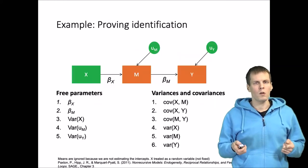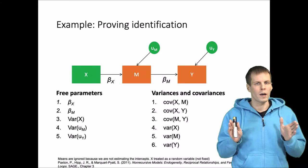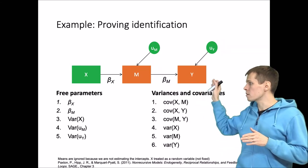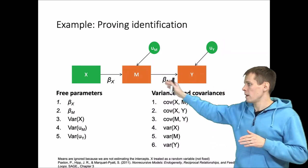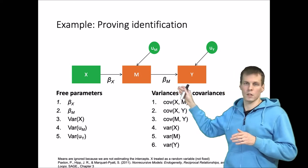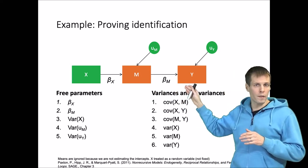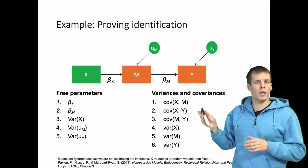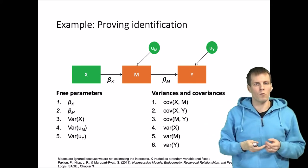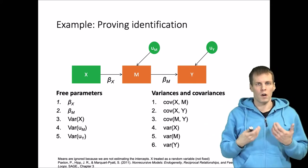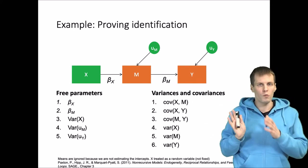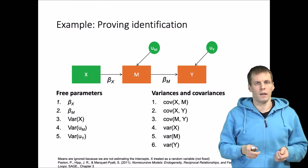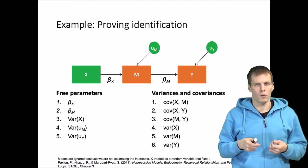So we want to prove identification of this model. Our model is a full mediation model: X influences M, which influences Y, and there is no endogeneity so the error terms are uncorrelated. We know based on the rule that all recursive models are identified that this should be identified, but we can also prove it and it's not that difficult to do.